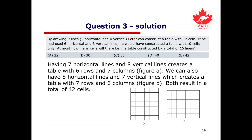Having 7 horizontal lines and 8 vertical lines creates a table with 6 rows and 7 columns, as demonstrated by figure A. Conversely, 8 horizontal and 7 vertical lines creates a table with 7 rows and 6 columns, as in figure B. Both result in a total of 42 cells. Thus, the answer is E.